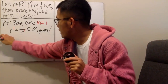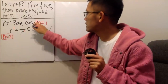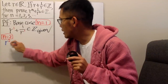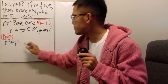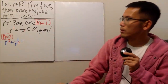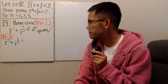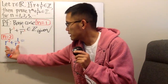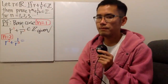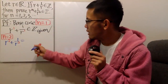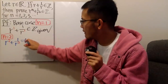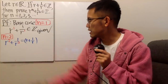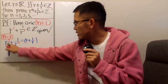Let's also check when n equal to 2. When we have n equal to 2, we have r squared plus 1 over r squared. Well, this is not so easy to do anymore, and the only thing we can do is make a connection between this and the n equal to 1 case. How can we do that?